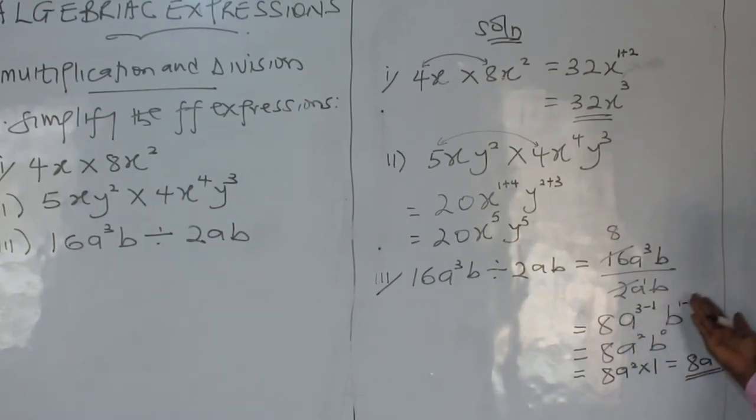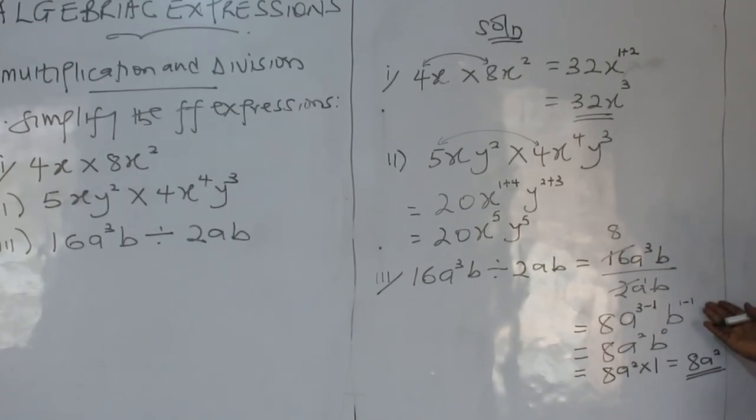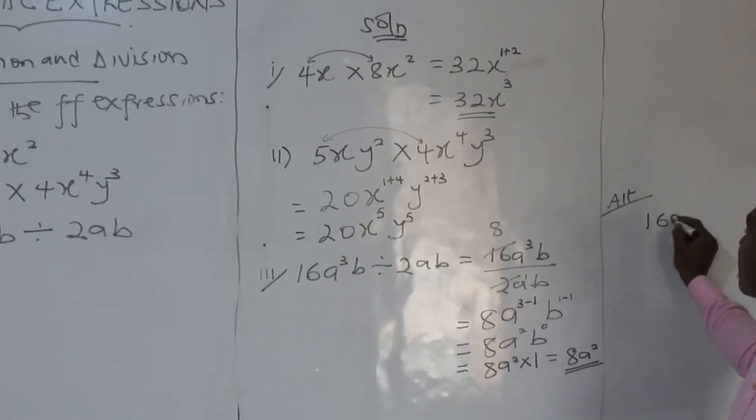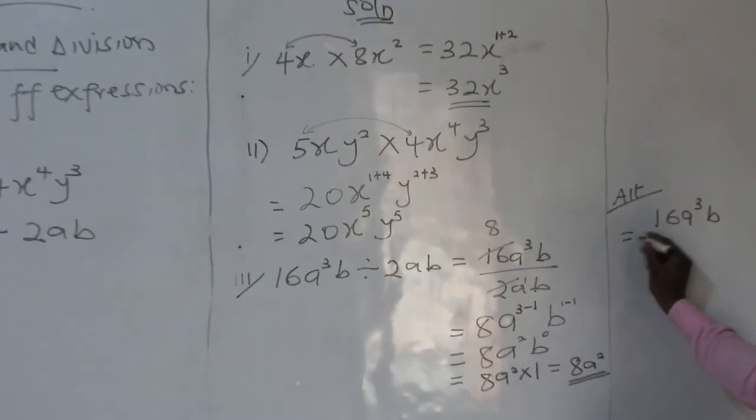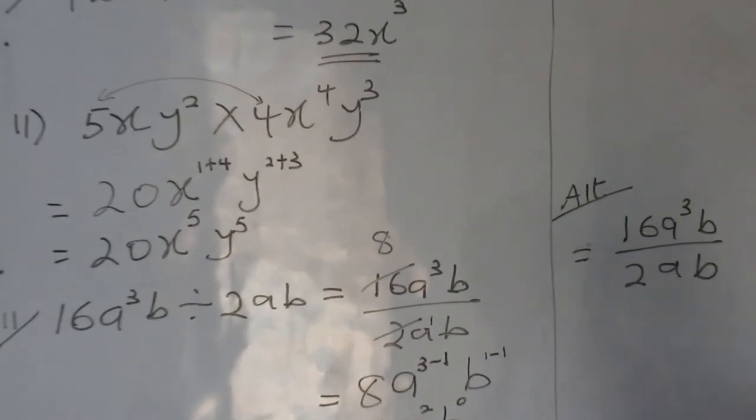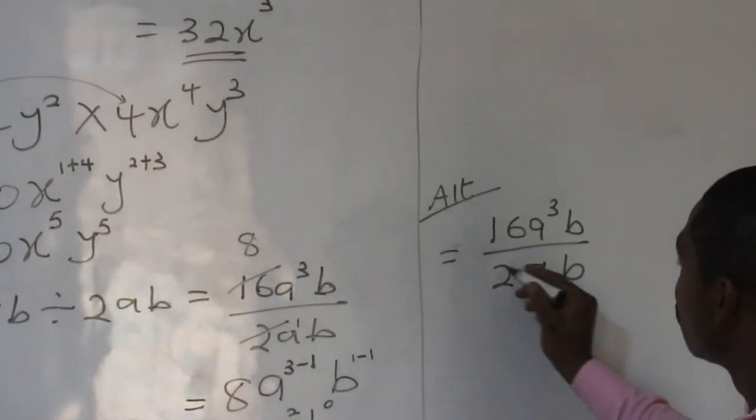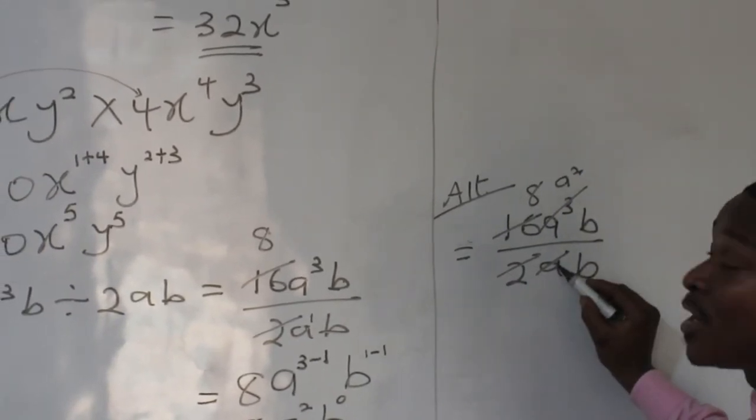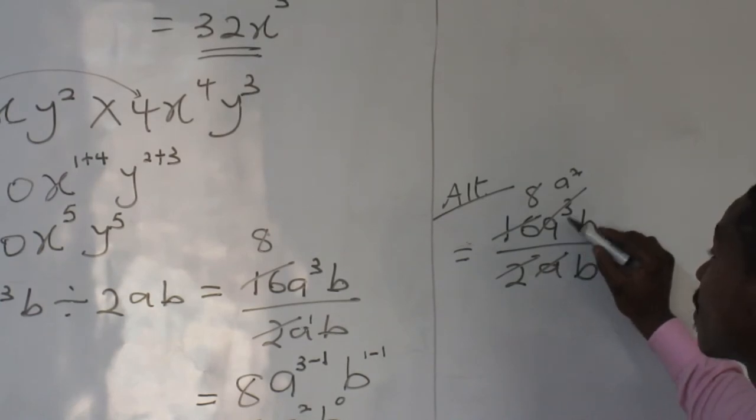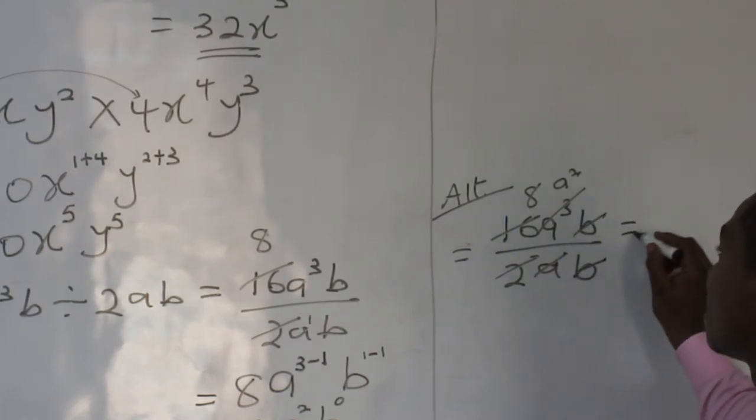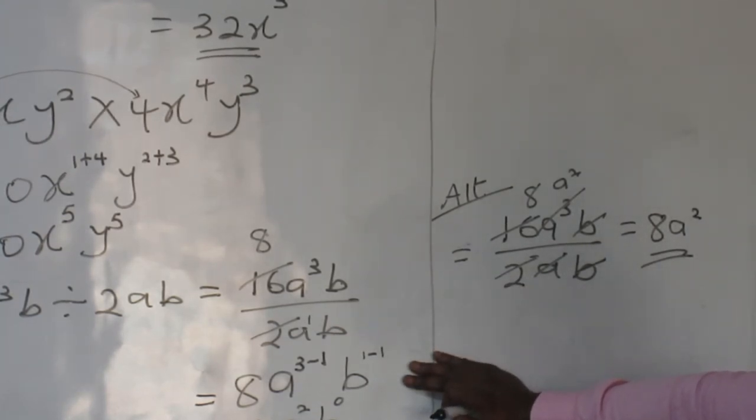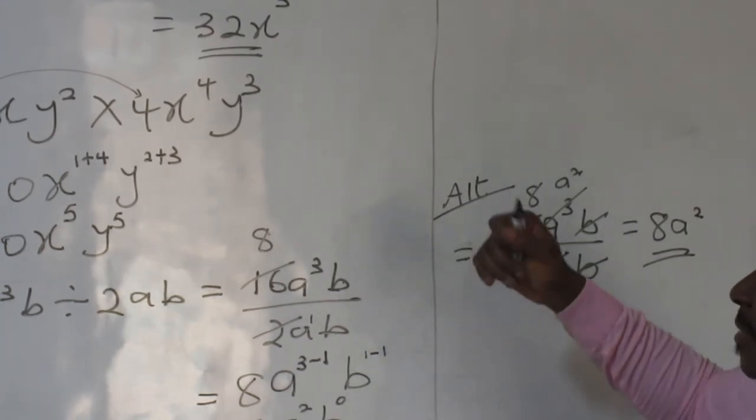So you have 8, a raised to the power 2, and this is b raised to the power 0. Now, every number raised to the power 0 is 1. So if it is 1, you get this. That is why our answer becomes 8a squared. Are you getting it? Now, this one is when you want to apply indices. Let's look at when you want to go straight. So I have 16a cubed b divided by 2ab. 2 goes here, 8. It means a goes here, a squared. It means when you take a power exponent 1 and a exponent 3, you get a exponent 2. B and b goes off. Then you have 8a squared.